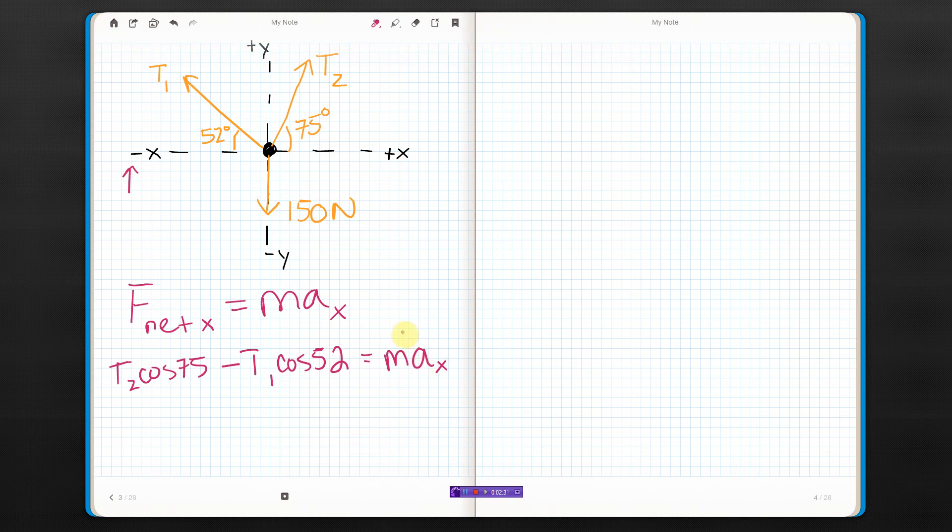And we said this thing was at rest, so the acceleration will be zero. I'm going to put that in now. Notice that means the mass of the sign doesn't really matter. Also, the weight in the X direction doesn't show up. So this is basically what we have right now.